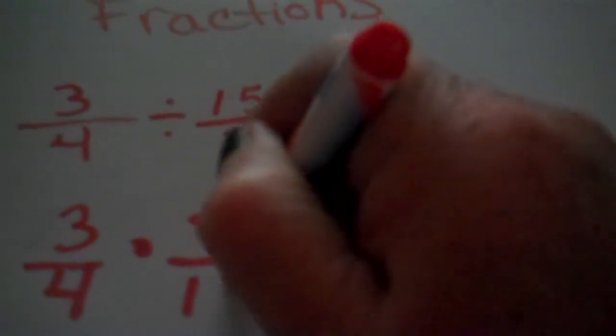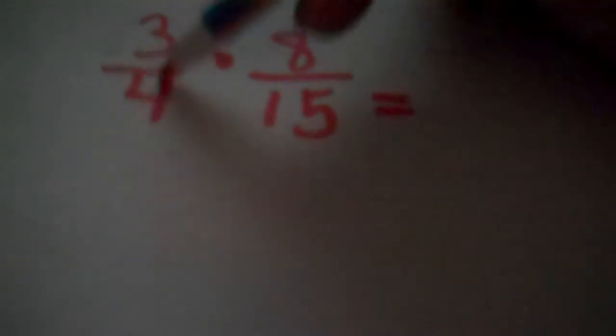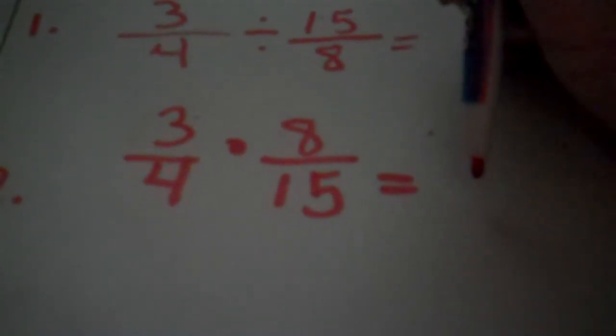And then flip the second problem. So we're going to take that eight, put it on top, and the fifteen underneath. Now that was so simple. It was very simple. Now, you can go ahead and multiply across here and get an answer, but I suggest that you go ahead and do your reducing before you do that.